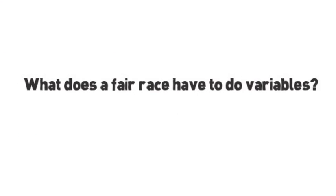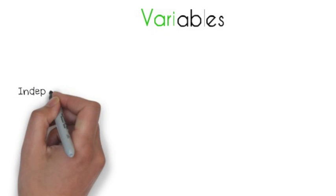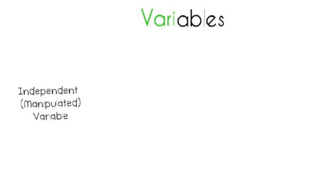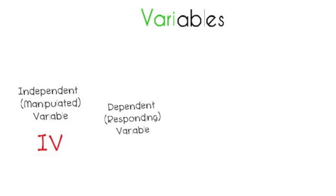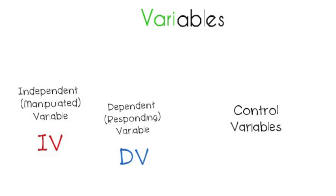So, what does a fair race have to do with variables? Variables has the prefix 'vari' and the suffix 'able.' Variable means to change, and able means the ability to. So, a variable is able to change. There are three types: the independent variable, abbreviated as IV; the dependent or responding variable, abbreviated as DV; and the control variables, abbreviated as CV.